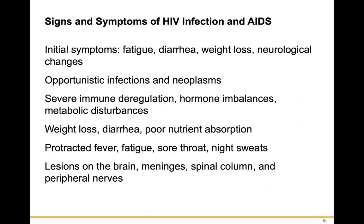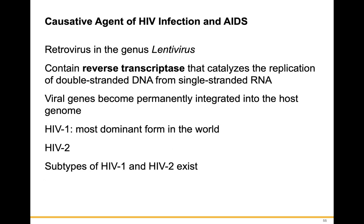AIDS symptoms include fatigue, diarrhea, weight loss, neurological changes, opportunistic infections, neoplasms, severe immune deregulation, hormone imbalances, metabolic disturbances, protracted fever, sore throat, night sweats, and eventually lesions on the brain, meningitis, lesions of the meninges, spinal cord, and peripheral nerves. The causative agent is a lentivirus containing reverse transcriptase that catalyzes replication of double-stranded DNA from single-stranded RNA. The viral genes become permanently integrated into the host genome. HIV-1 is the most dominant form worldwide, with HIV-2 and various subtypes also existing.